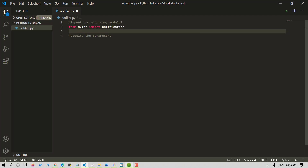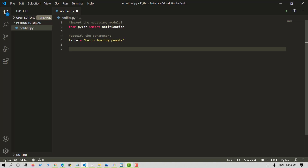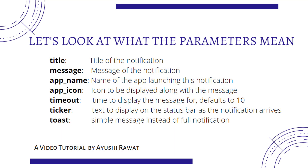Now let's specify the parameters. We'll define the title and the message. Title will specify the title of the notification. Message is the message that you want to display as your notification. App name is the name of the application launching this notification. App icon is the icon that will be displayed along with the message. Timeout is the duration for which you want to display your message. Ticker is the text to display on the status bar as soon as the notification arrives. And toast is a simple message instead of a full notification.